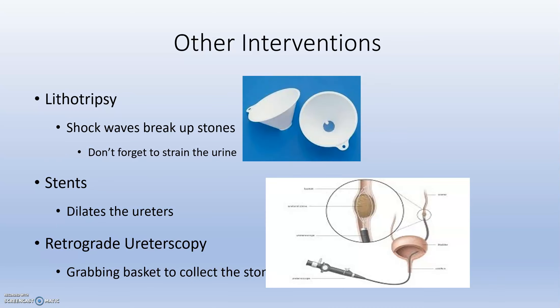Other interventions include lithotripsy, which uses shock waves to break up large stuck stones so the patient can pass the smaller pieces. They can also place stents to dilate the ureter and allow the stone to pass. Or they can perform a retrograde ureteroscopy — going through the urethra into the bladder and up into the ureter to grab and remove the stone. None of it feels good.